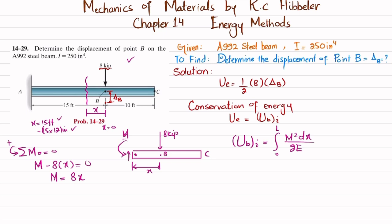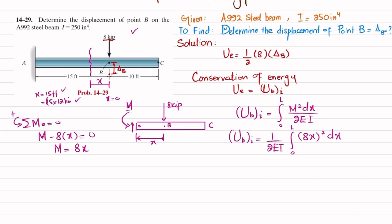You can put the value: 1 over 2EI, integral from 0 to L. What is M? M is 8x, so 8x squared times dx. That will give you bending strain energy. Now this bending strain energy is equal to 1 over 2EI integral from 0 to L.